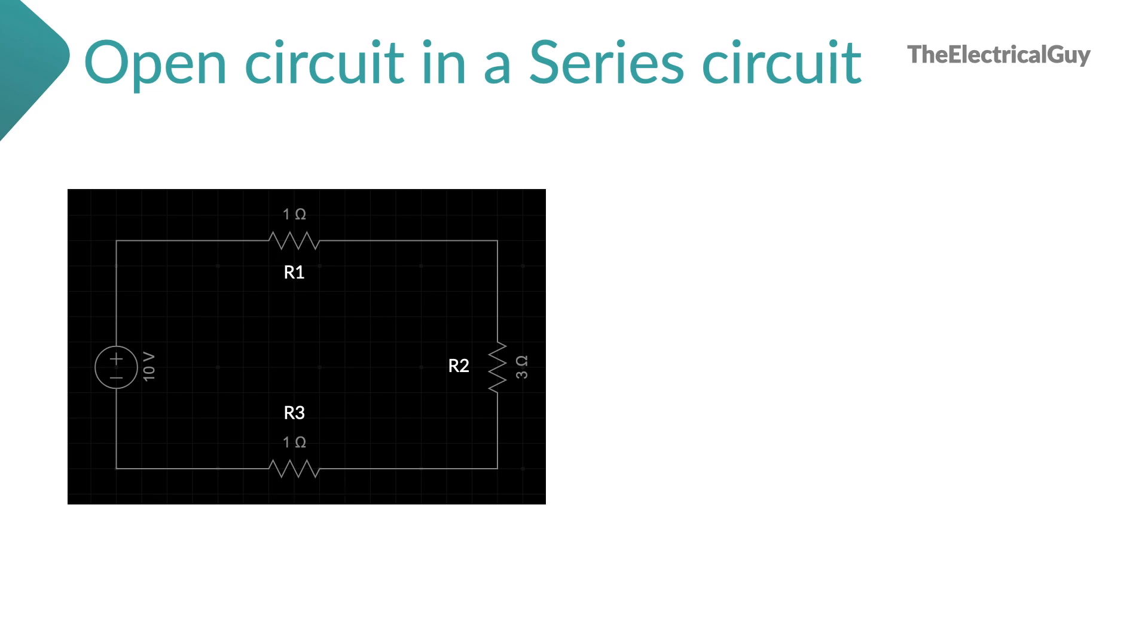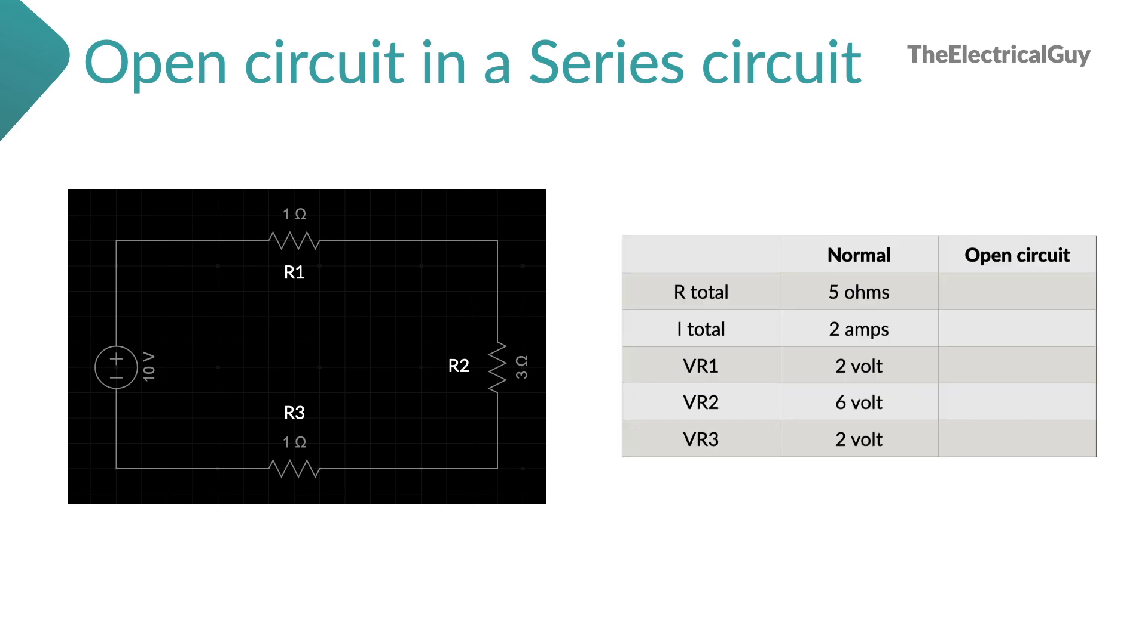So let's start with the open circuit in a series circuit. Let's consider a simple series circuit as shown. We have a 10V supply and 3 resistors R1, R2 and R3. Equivalent resistance of this circuit will be R1 plus R2 plus R3 that is 5 ohms. Therefore the total current is 2 amps.